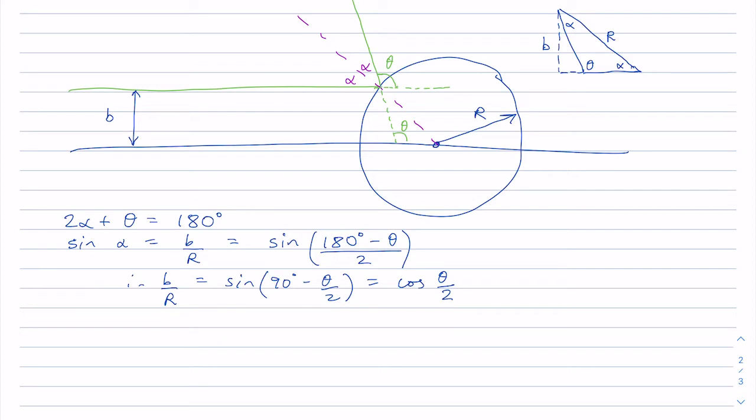So this gives me an expression for b in terms of theta, or theta in terms of b. So I can write, for example, that theta equals 2 inverse cos of b over r if b is less than or equal to r, and it's 0 if b is greater than r. In other words, if it misses the hard sphere. And so we have an expression for the scattering angle theta as a function of the impact parameter.